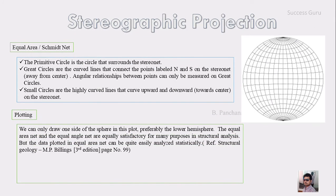For plotting, we can only draw one side of the sphere. Preferably the lower hemisphere for structural geology; for crystallography we prefer the upper hemisphere. The equal area net and the equal angle net are equally satisfactory for many purposes in structural analysis, but we still prefer the equal area net because its data can also be easily analyzed using statistical analysis.